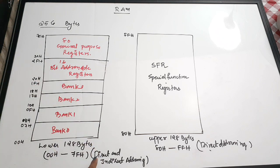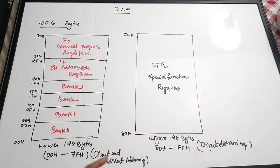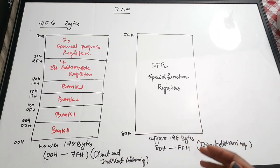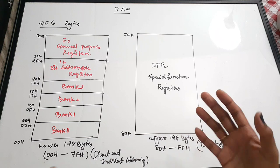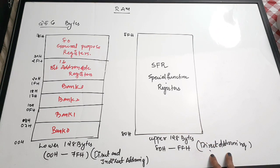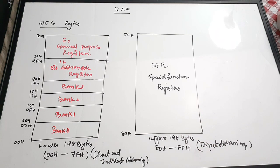The lower 128 bytes can be accessed using both direct and indirect addressing modes. However, the upper 128 bytes — which contain all the special function registers — can only be accessed using direct addressing.